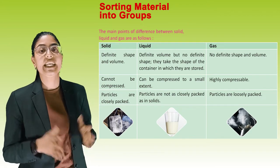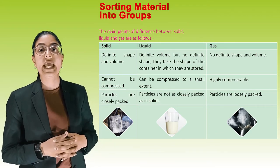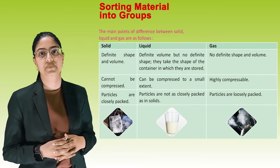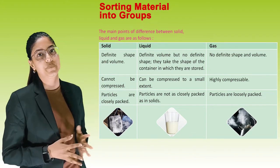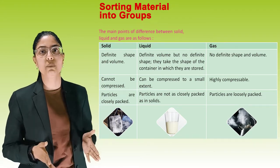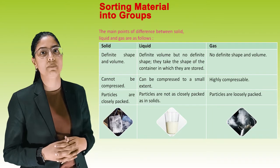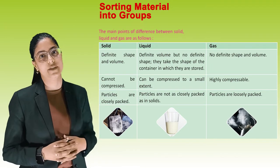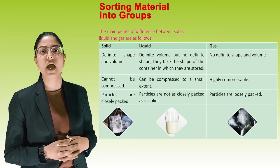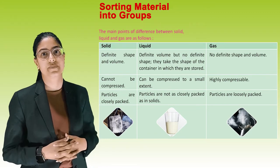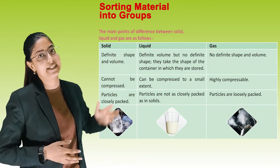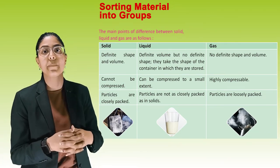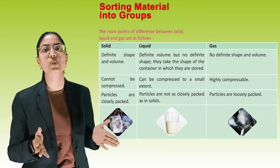Solid has a definite shape and volume and cannot be compressed; particles are closely packed. Liquid has a definite volume but no definite shape — it takes the shape of the container in which it is stored; it can be compressed to a small extent and particles are not as closely packed as in solids. Gas has no definite shape and volume, is highly compressible, and particles are loosely packed.